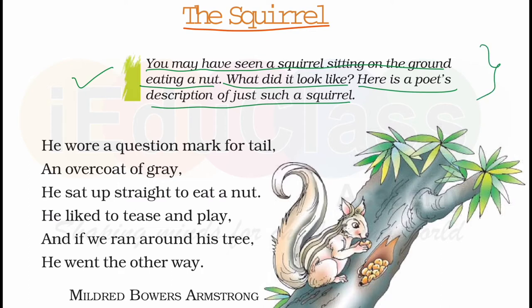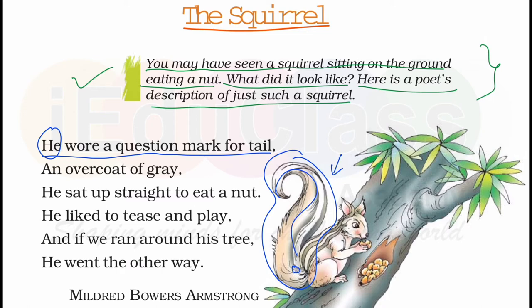In his garden, watching the squirrel, the poet says he wore a question mark for a tail. You can see the question mark shape in the squirrel's tail — it looks just like a question mark.